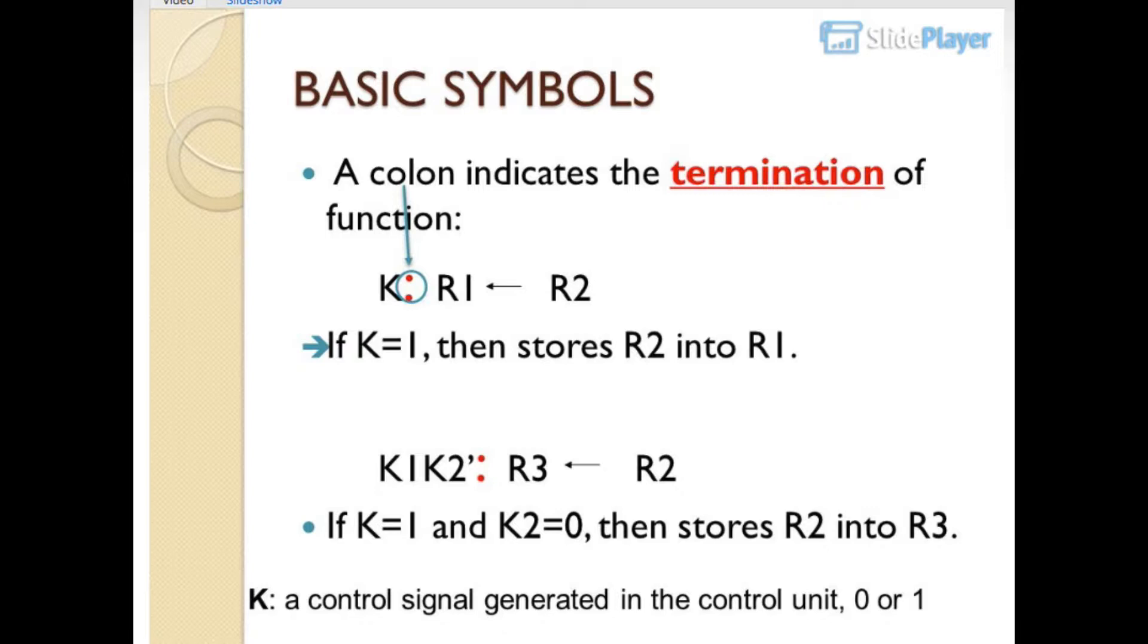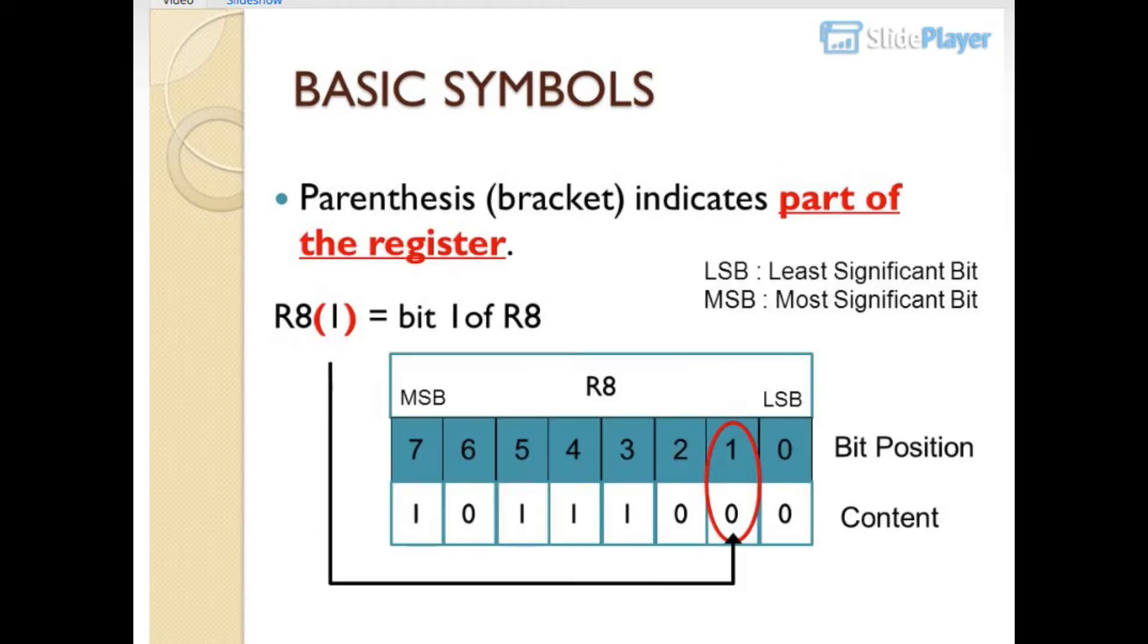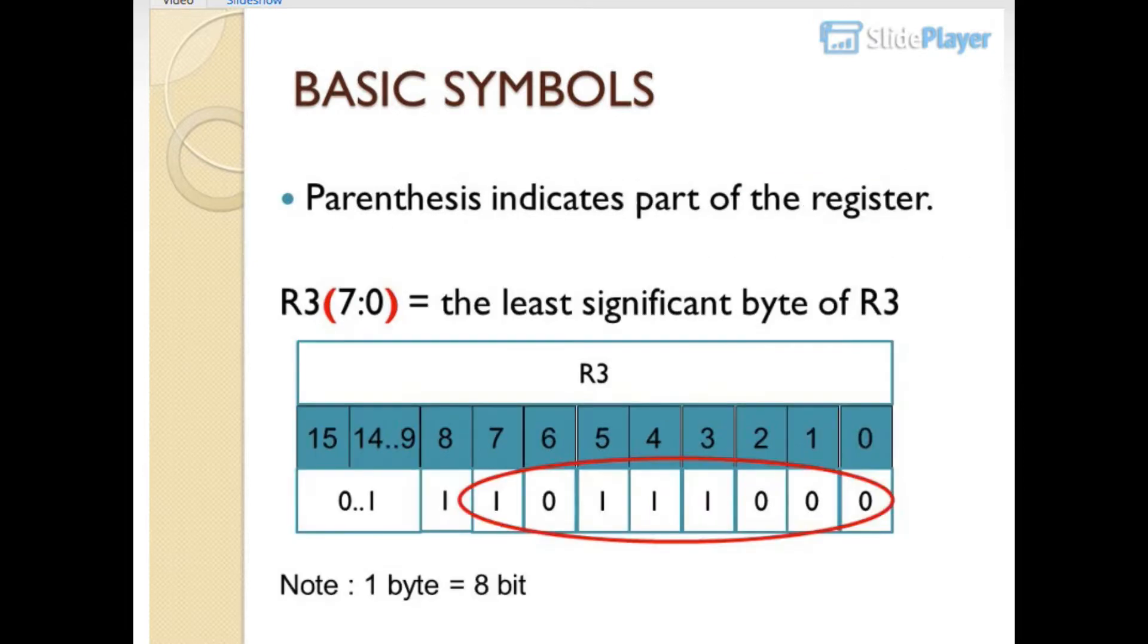K is a control signal generated in the control unit, 0 or 1. Basic symbols: parenthesis or bracket indicates part of the register. R8(1) equals bit 1 of R8. LSB is least significant bit, MSB is most significant bit.